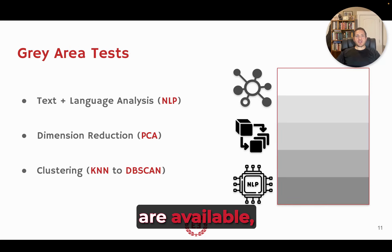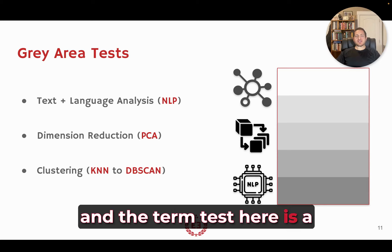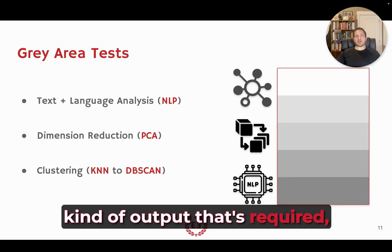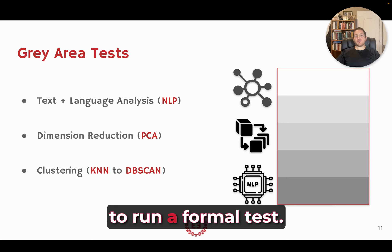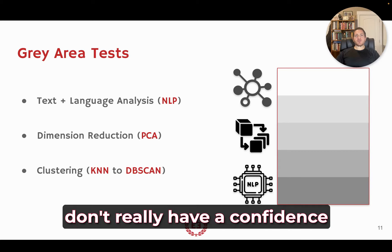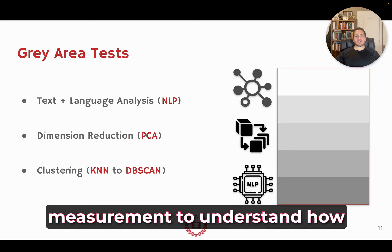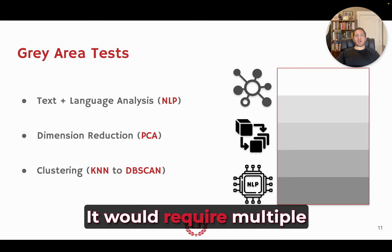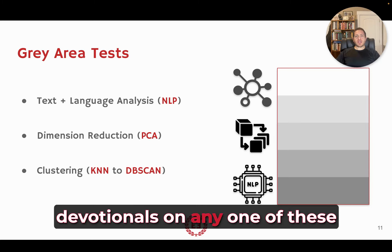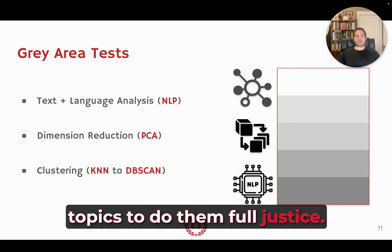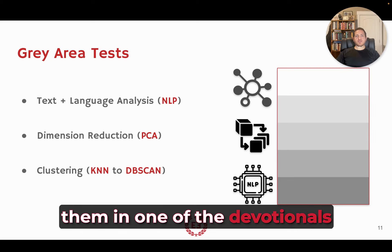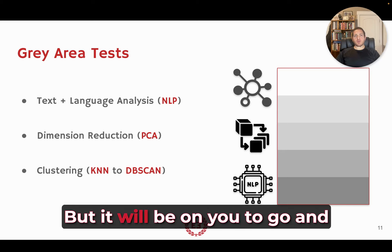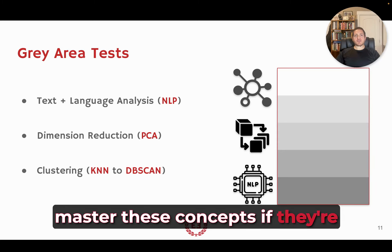The gray area tests are some of the most powerful available, though the term 'test' is a little misleading because some do not have the kind of output required — like a p-value — to run a formal test. Instead, you just get the output without a confidence measurement to understand how well it reflects the population. It would require multiple devotionals to do any one of these full justice, so we'll cover all of them in one devotional by providing code and walking through it.